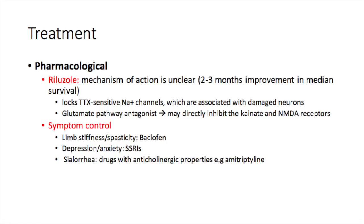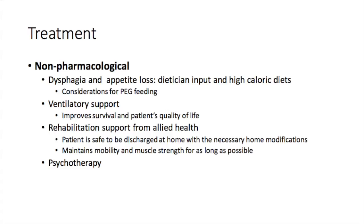When it comes to treatment, both pharmacological and non-pharmacological approaches play an important role. Riluzole can be prescribed in motor neuron disease; its mechanism of action is not fully clear, although it has been shown to modestly improve survival by a median of two to three months. It is believed to act on the glutamate pathway as an antagonist, inhibiting kainate and NMDA receptors, and possibly acting on sodium channels. For limb stiffness and spasticity, baclofen can be prescribed. For depression and anxiety, SSRIs may be warranted, and for hypersalivation, drugs with anticholinergic properties such as atropine and amitriptyline can be considered.